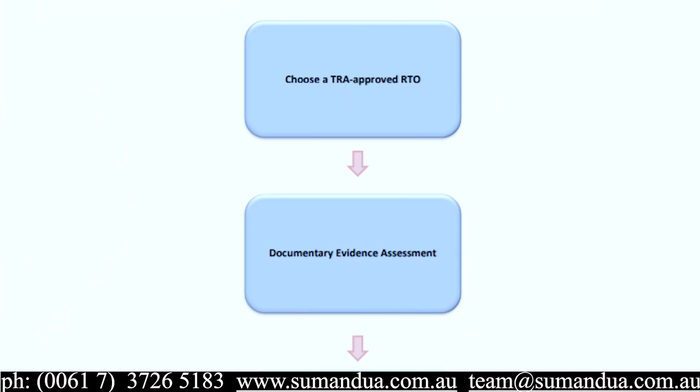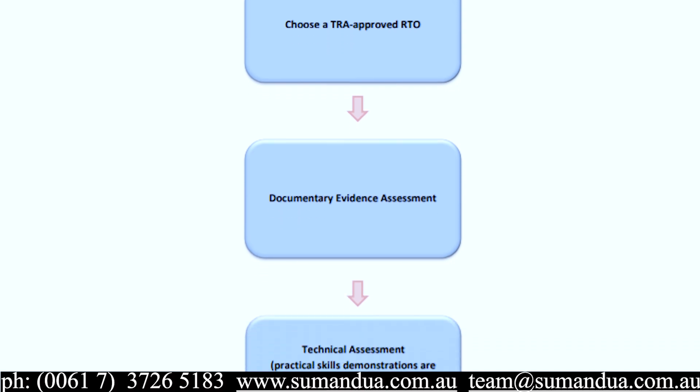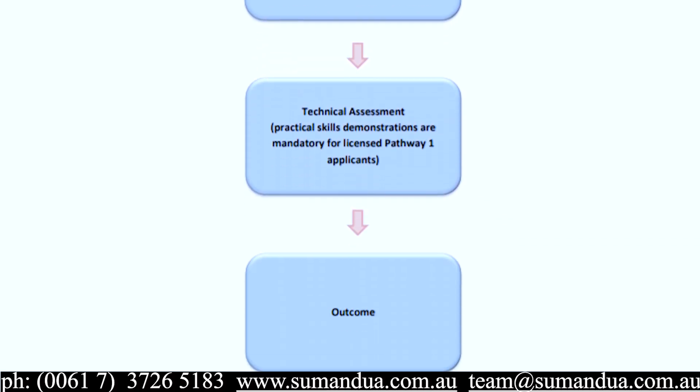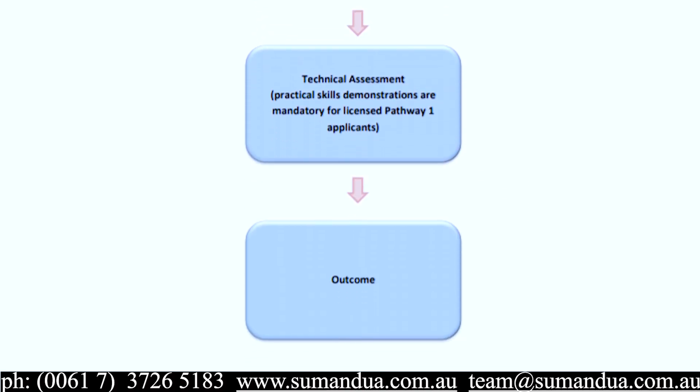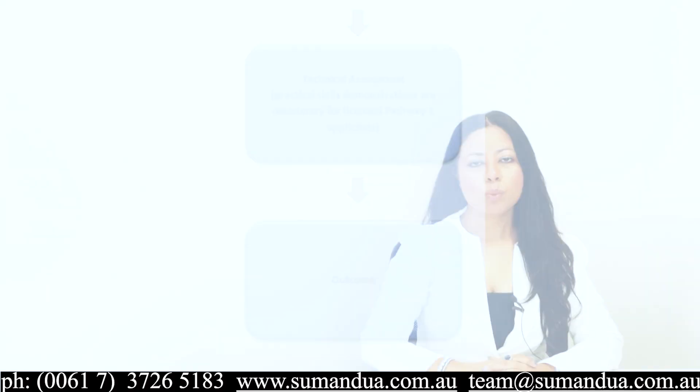There are a few steps involved in getting a positive skills assessment for your trade occupation. As you can see on my screen, the first step is to choose a TRA-approved RTO, then organize the documentary evidence assessment, and then the technical assessment. Practical skills demonstrations are mandatory for licensed pathway one applicants, after which you will receive your outcome.